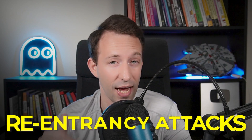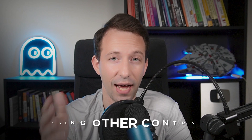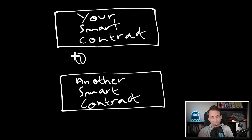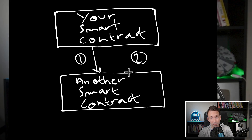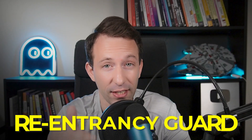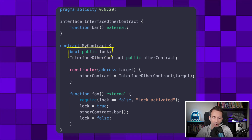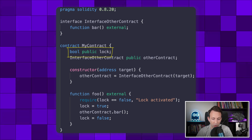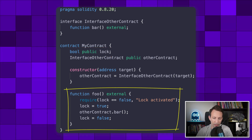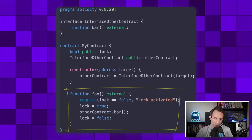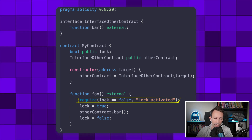The next trick is to protect yourself from re-entrancy attacks — so many protocols were destroyed by this. You have to be very careful when you call another smart contract from your Solidity code. A re-entrancy attack is when your smart contract calls another smart contract and that other smart contract calls back your smart contract, creating an execution path you didn't anticipate. The most simple solution is a re-entrancy guard: define a boolean flag at the contract level. Before the call, throw an error if the flag is true, then set the flag to true. After the call, set the flag back to false. If another contract tries a re-entrancy attack, it will be blocked.